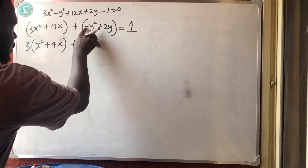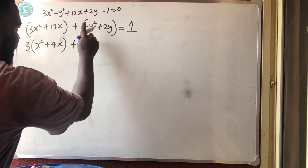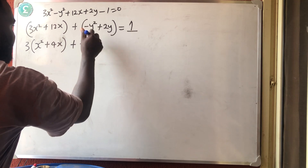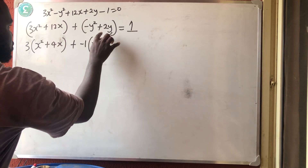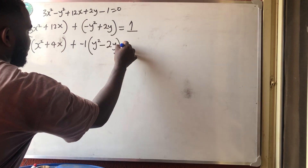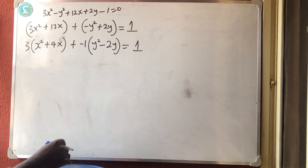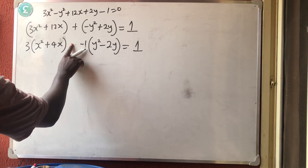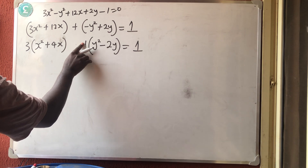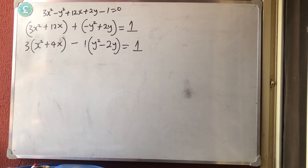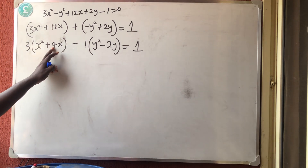Now bring out the coefficient for the y terms — the coefficient is −1. Factoring out −1: −1 times (y² − 2y). The right-hand side becomes −1. Now we are ready to apply the completing the square method.